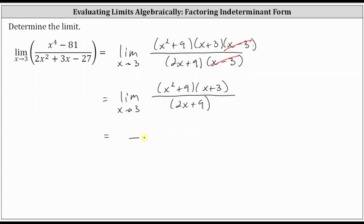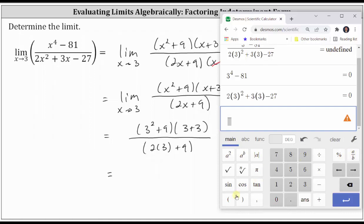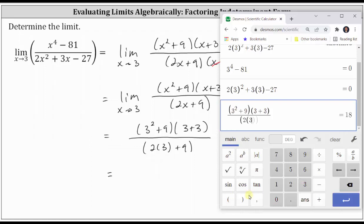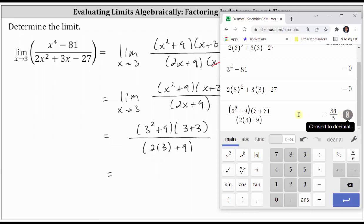Substituting three for x, we have three squared plus nine times three plus three, all divided by the quantity two times three plus nine. Going to the calculator, the limit is equal to 7.2. If we want the fraction form, we click on the circle on the far right, which gives us 36 fifths.